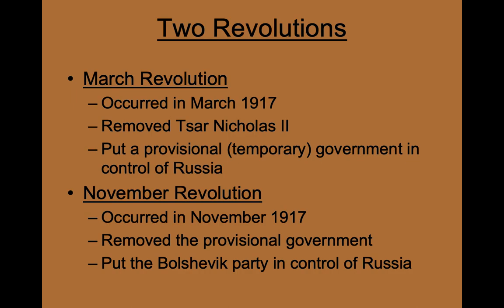Due to dissatisfaction and unhappiness with the provisional government, a second revolution occurred in November of 1917. This revolution, which was led by Vladimir Lenin and other members of the Bolshevik Party, removed the provisional government and put the Bolsheviks in charge of Russia, allowing them to transition the country to the economic and political philosophy known as communism.